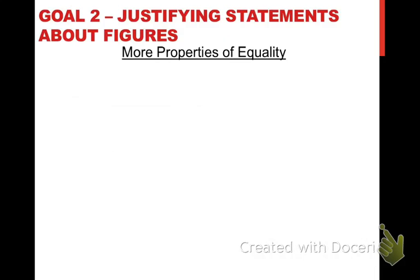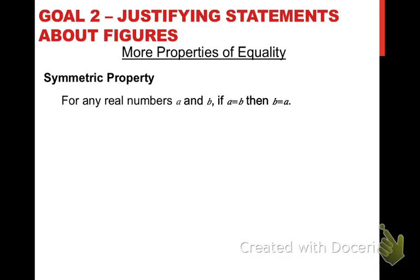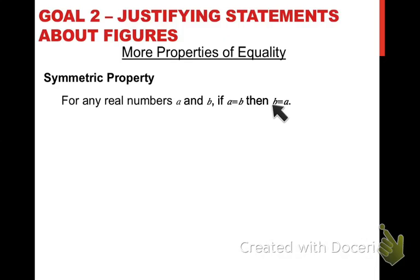For the symmetric property of equality, which I actually referenced in the last video: the symmetric property of equality means that if you have two quantities that are equal to one another, then you're allowed to switch which side of the equation each of those quantities is written on. Instead of writing A on the left and B on the right, you could just as easily put B on the left and A on the right side of the equal sign, and you would still have a true statement.